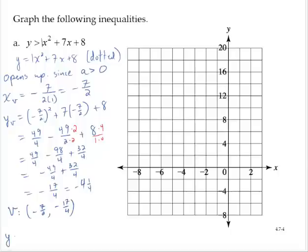I'll also note that the y-intercept, letting x equal 0, would be 0, 8. So that's enough information to get a rough sketch of the curve, and that will help us graph the inequality. We could find the x-intercepts to be more specific, but we won't do that here.